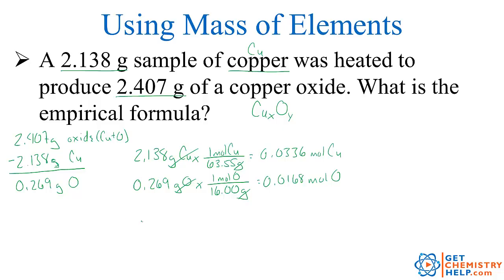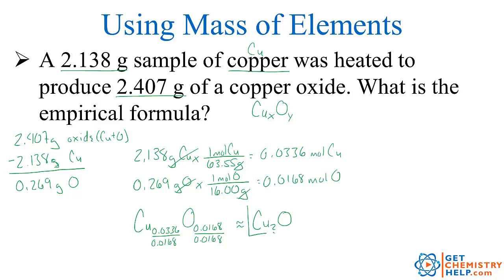The way we can find the whole number ratio is to write a pseudo-formula: Cu 0.0336, O 0.0168. Now divide both by the smallest — 0.0168 — and that gives me Cu2O. So this is the empirical formula of our copper oxide: two coppers for every one oxygen, or two moles copper for every one mole oxygen.